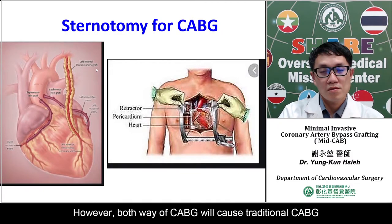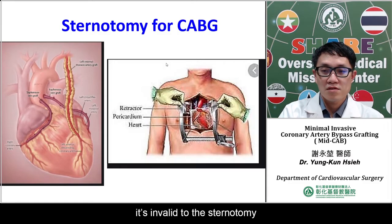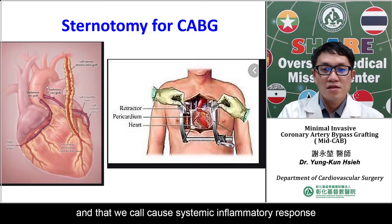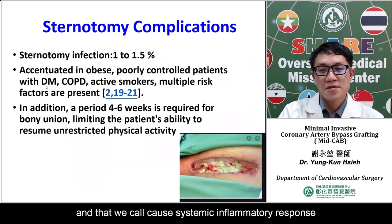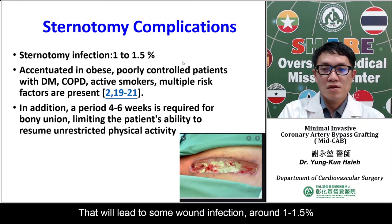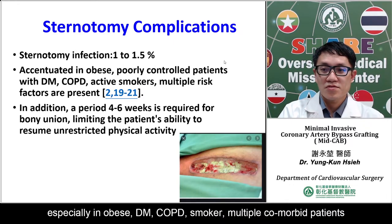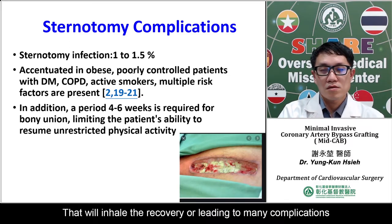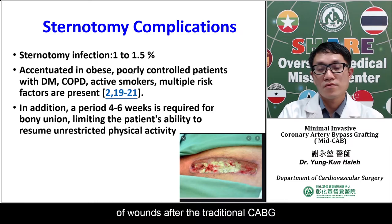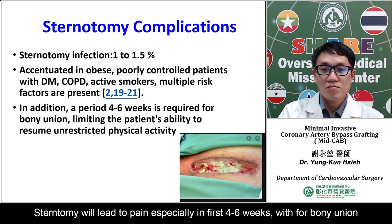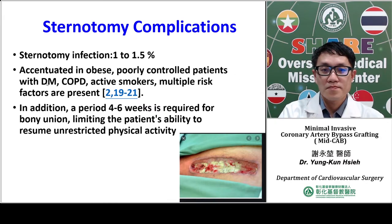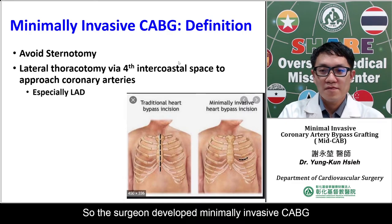However, both ways of CABG — what we call traditional CABG — require a median sternotomy. The sternotomy opens the chest and causes a systemic inflammatory response, and there will be wound infection in around 1 to 1.5 percent of cases, especially in obese, diabetic, COPD, smoker, or multiple comorbidity patients. This will impair recovery or lead to many complications after traditional CABG. The sternotomy also leads to pain, especially for the first four to six weeks while waiting for bony union.